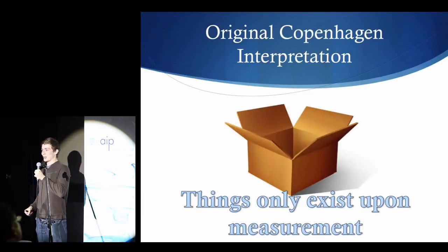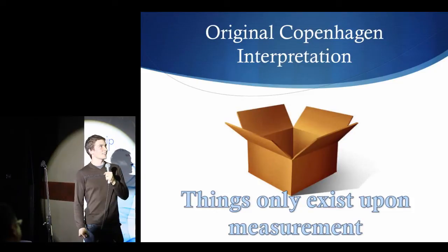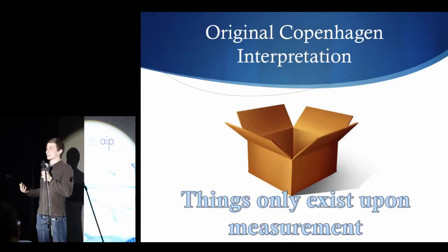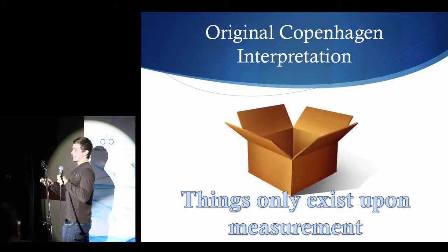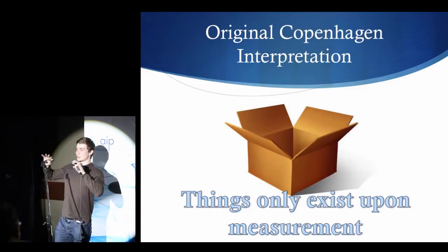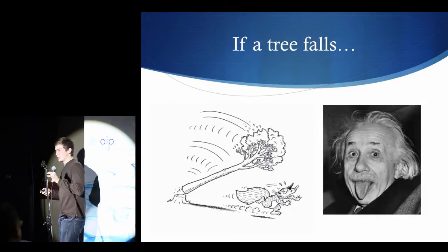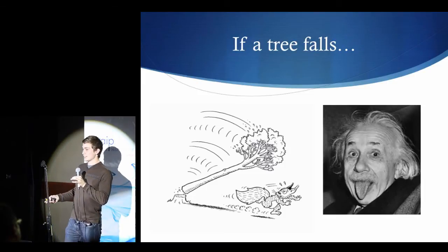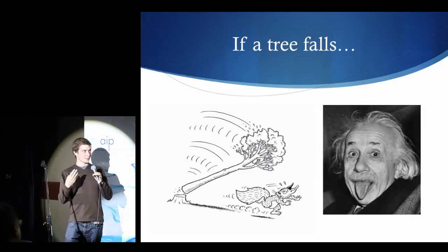And that leads us to our interpretations of quantum physics. Now, there's the original and probably most accepted interpretation called the Copenhagen interpretation. Now, this says that things only exist upon you measuring them, i.e., the cat is not dead or alive until you open the box. And once you open the box and measure it, this wave function collapses to one state or the other depending on the conscious observer. Now, this is the same thing as saying, if a tree falls in the woods and no one was there to observe it, did it really fall or did it really make a sound? And this is what the Copenhagen interpretation sort of leads you to think.